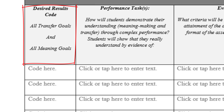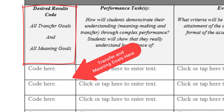You'll notice on the left side of the screen that we have codes for our transfer and meaning goals. When we wrote those goals in stage one, they had codes applied to them. When you come up with your different performance tasks for students to complete, you'll be writing the specific goals that match with those performance tasks over here on the left. That's to make sure that all the planning we did in stage one is being applied to our evaluations.